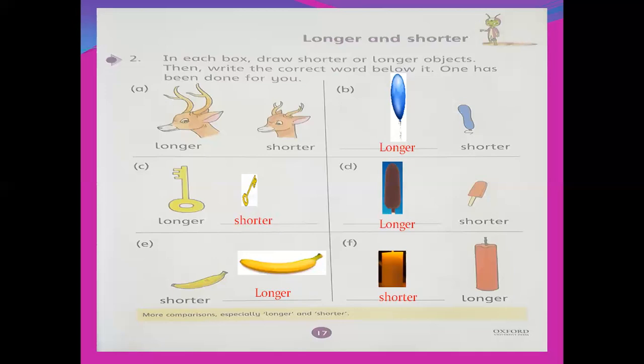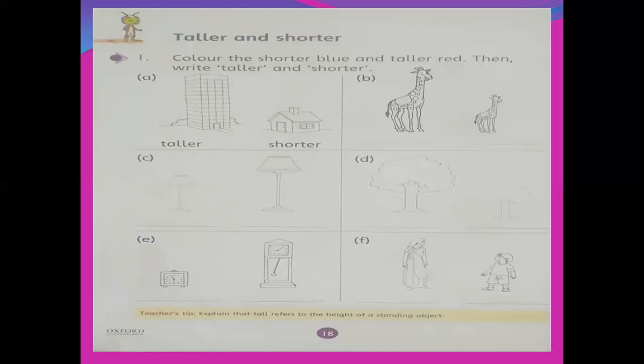Page number 18 — taller and shorter. Same concept. In this question: color the shorter blue and taller red, then write 'taller' and 'shorter'. Here again you will do two things: first you will write the shorter or taller, and according to that you will color — red for taller and blue for shorter. I will not color, but I will write 'shorter' and 'taller' for you, and you will write at home and then also color the pictures.